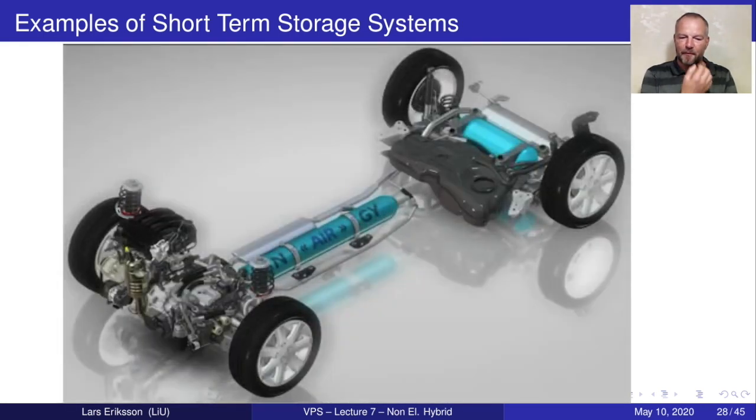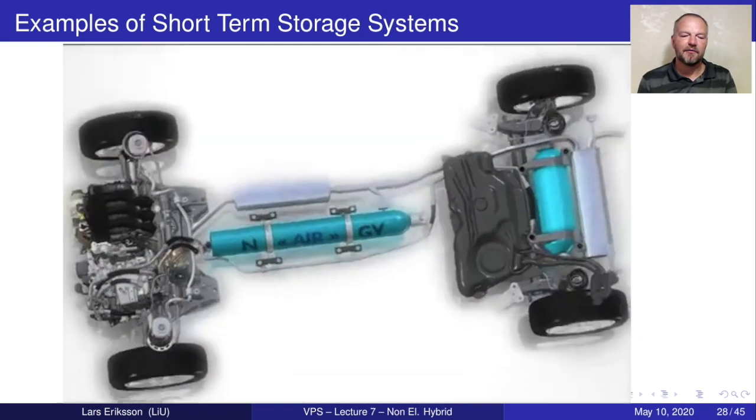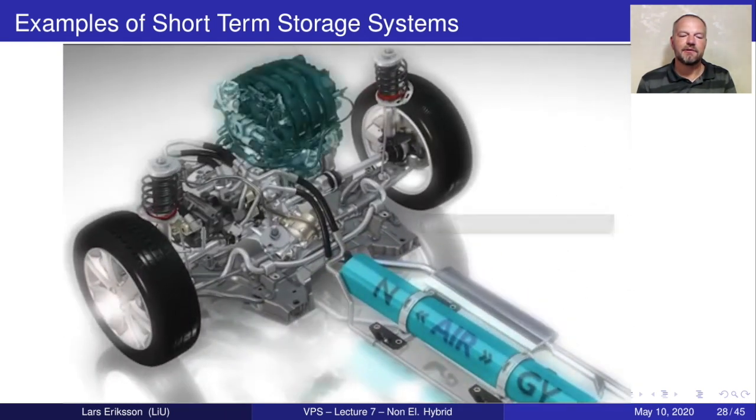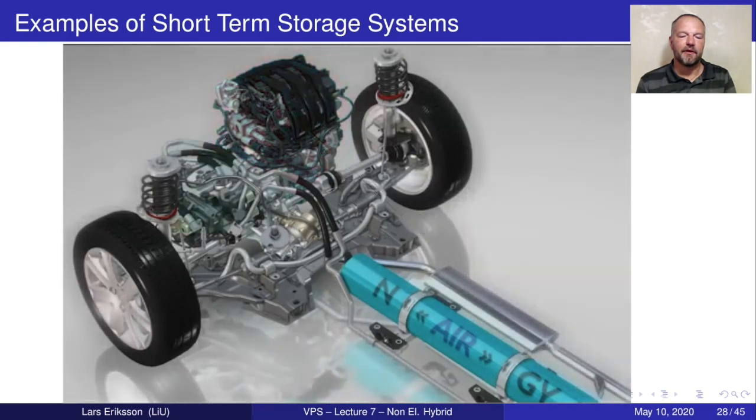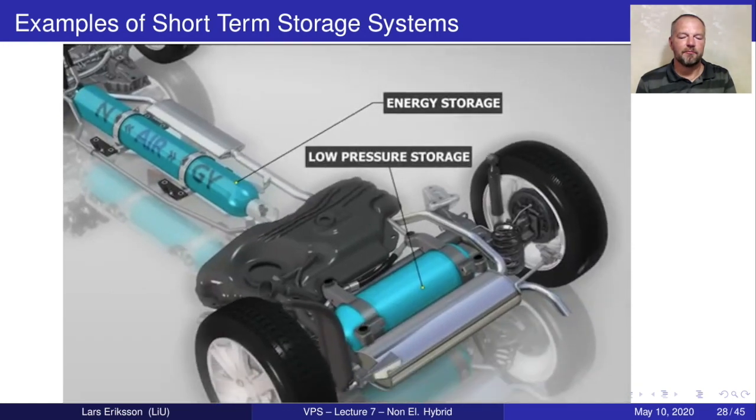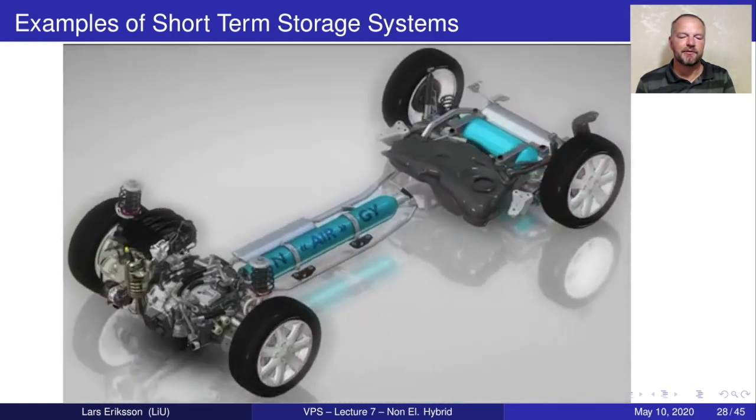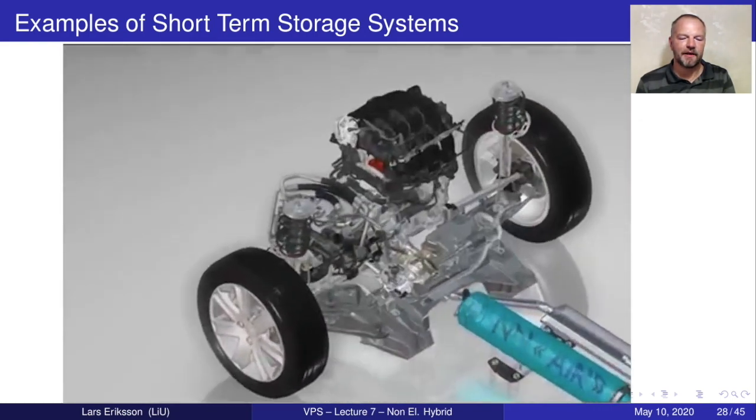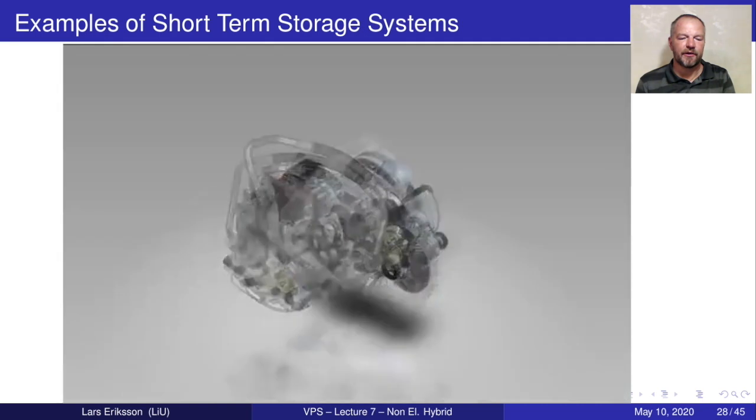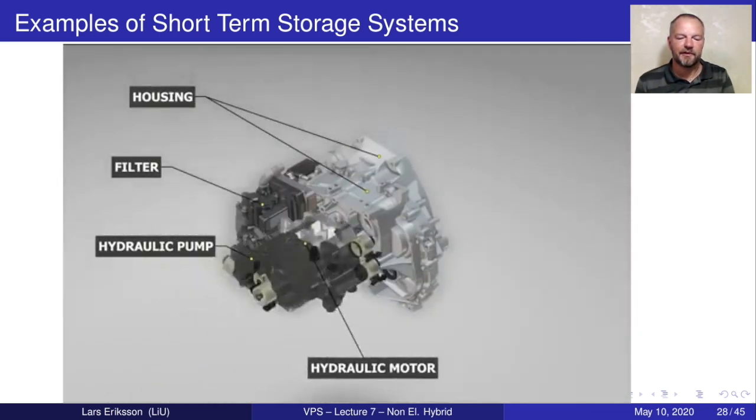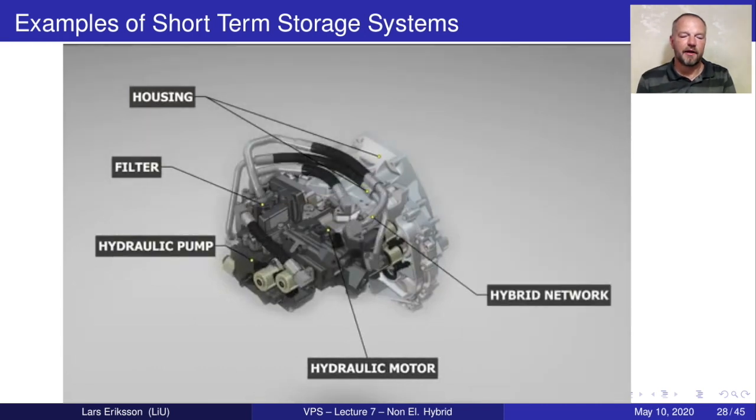Here you see a drivetrain with the components of a vehicle. We have the engine, a gearbox, and two energy storages, one that's mainly for the propulsion and regenerative braking. Then we have the hydraulic unit with hydraulic pump, oil filters, and all the other components needed to have it running.